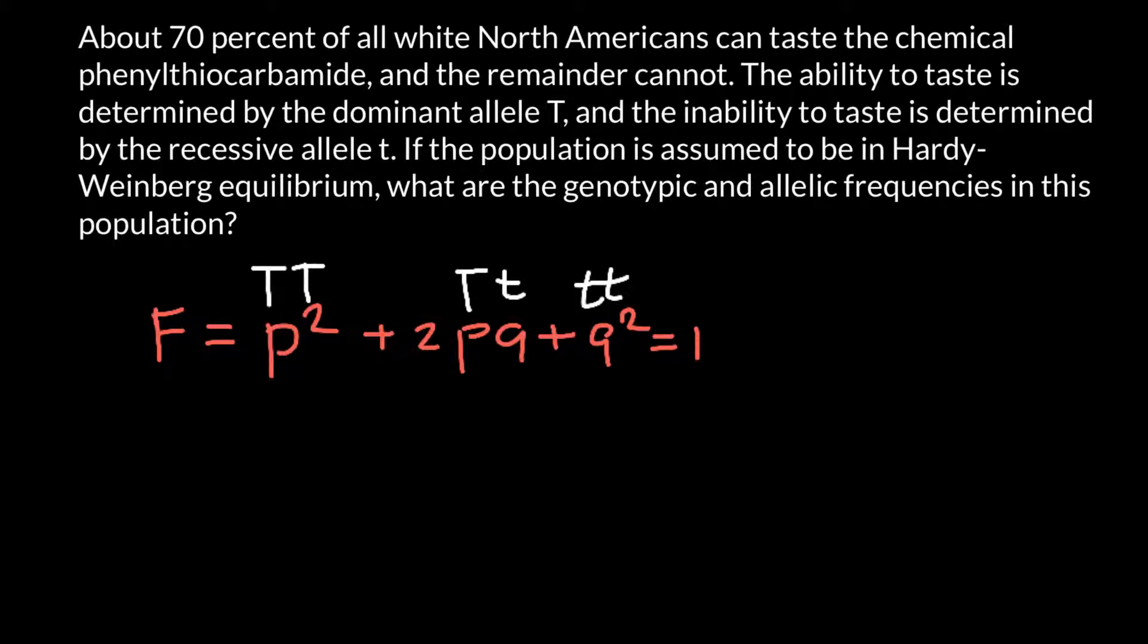We are told that p squared and 2pq genotypes are 70% in this population, because these two genotypes make the same phenotype. The q squared genotype makes another 30% in this population. On the scale between 0 and 1, the frequency of the first phenotype would be 0.7, and the frequency of the homozygous recessive genotype and phenotype would be 0.3.